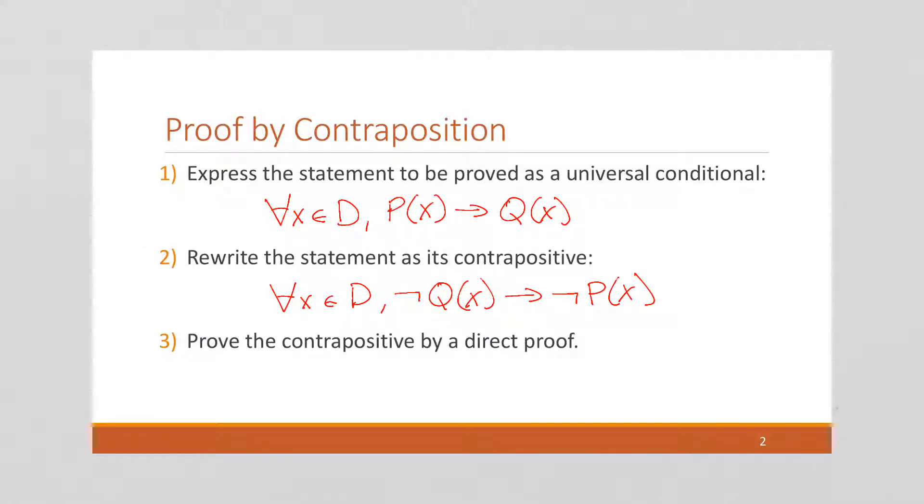And then finally, we want to use a direct proof to prove the contrapositive. So we're going to start by supposing this first part as we always do in a direct proof, and then we're going to want to deduce the second part.